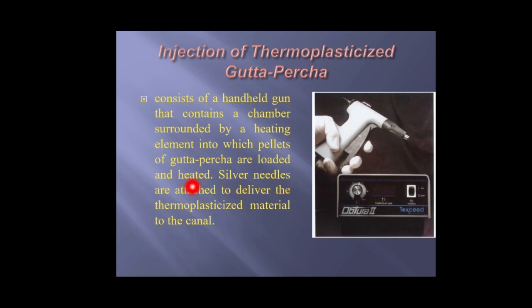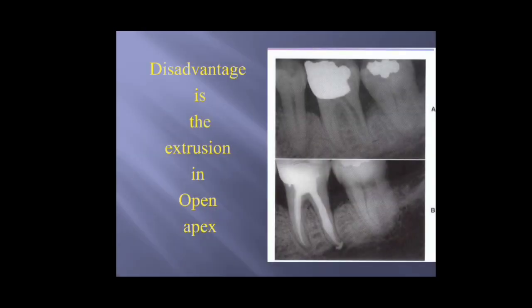Sometimes gutta-percha must be manipulated thermally by softening it inside a device called the Obtura 2 gun, which has a heating chamber. The gutta-percha is softened inside the gun and inserted via a needle into the canal. This type of obturation has the disadvantage of extrusion from the apex in cases of open apices, and there is a lack of control of the apical stop.